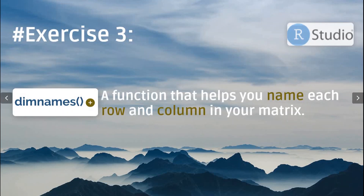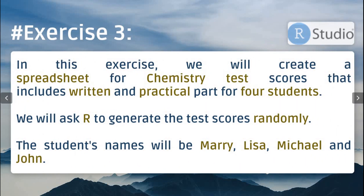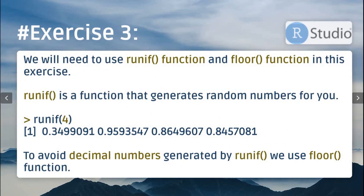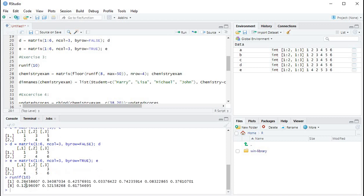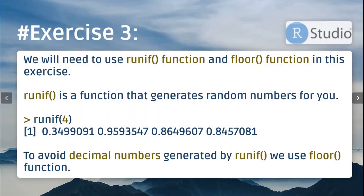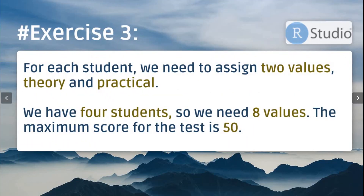If you want to name your columns and rows at the same time, dimnames is the function to use. In this exercise we will create a spreadsheet for chemistry test scores that includes written and practical exams for four students. We will ask R to generate the test scores randomly using the runif function and the floor function. The students' names will be Mary, Lisa, Michael, and John.